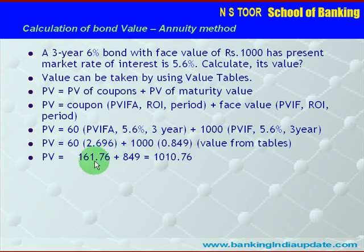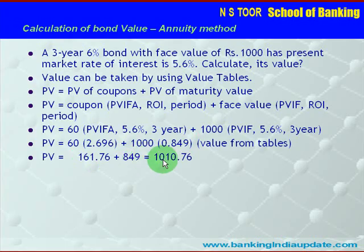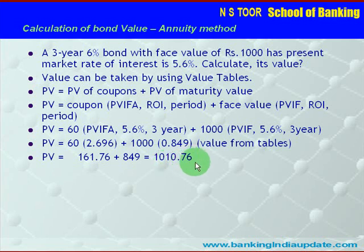This gives us Rs. 161.76 for the coupon portion, and Rs. 849 for the maturity value portion, so the present value of the bond is Rs. 1010.76. If we calculate the present value using only the discounting method, we would get the same amount.